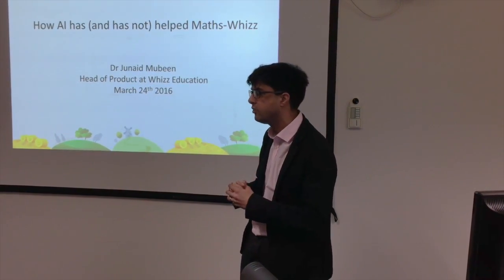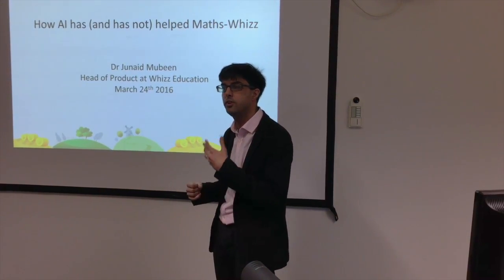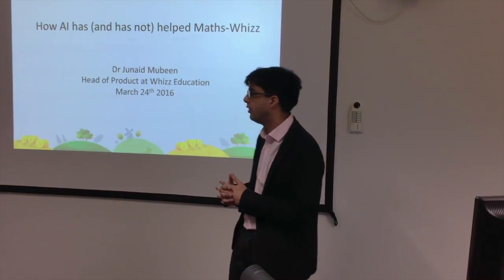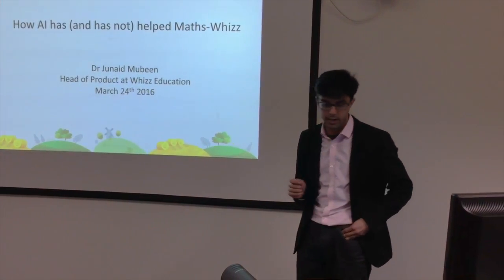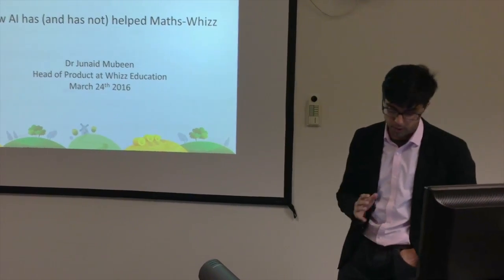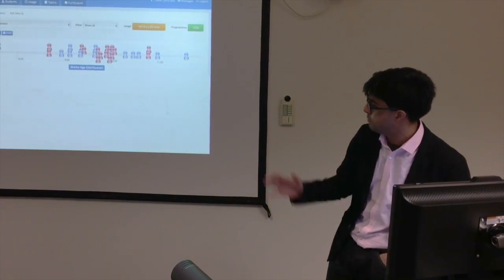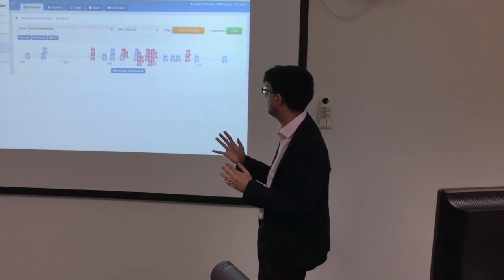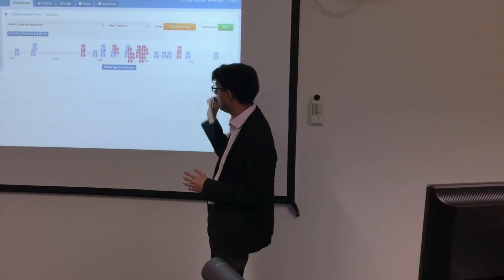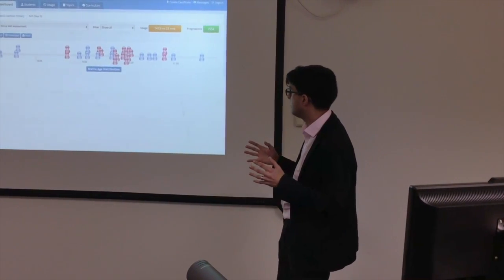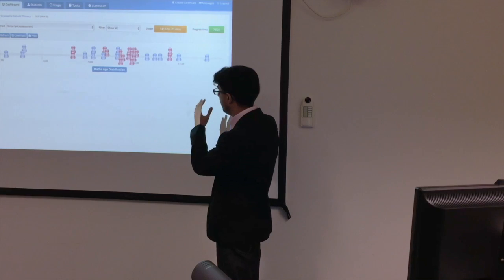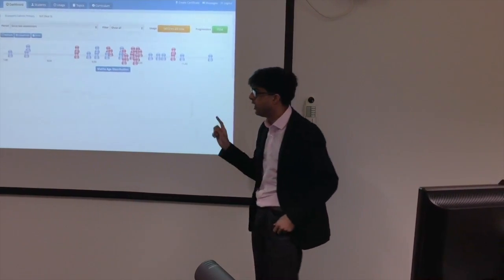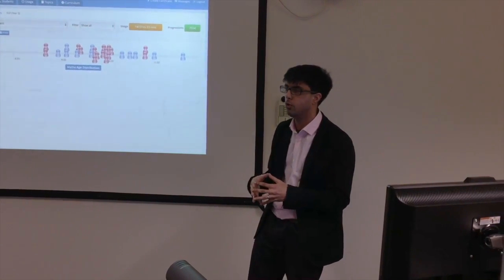Maths age is much like reading age — it has a very natural interpretation. A child with a maths age of nine can be said to be progressing at the level we'd expect of a typical nine-year-old. What I want to show you now is a class report from a whole class of students. Each of these icons corresponds to an individual student, and this scale plots their maths age. We can see there's a four-year gap between the highest-achieving and lowest-achieving students, and that trend is consistent in classrooms all across the world.